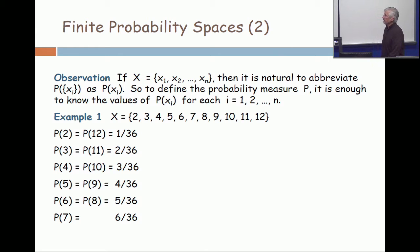All right, let's take an example. When you have a set and you can label it as X₁ through Xₙ, it's natural to abbreviate the probability of the singleton set {Xᵢ} as just P(Xᵢ), without the extra squiggles. So all you need to do to define the probability measure is to define the probability on the singleton sets.